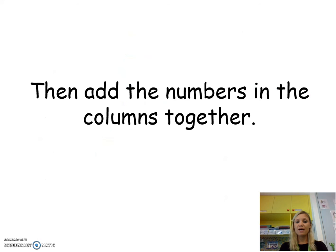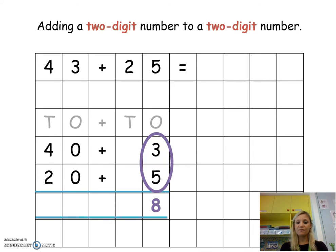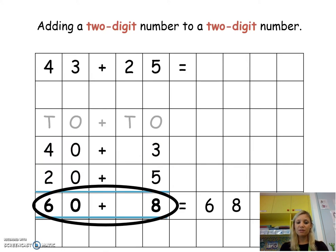Again we're going to add up the numbers in the columns. The first column we've got 3 add 5 equals 8 and we've recorded it at the bottom. Then we're going to add the second column which is 40 add 20 which is 60. And finally we're going to add the two numbers at the bottom which is 60 plus 8 equals 68.